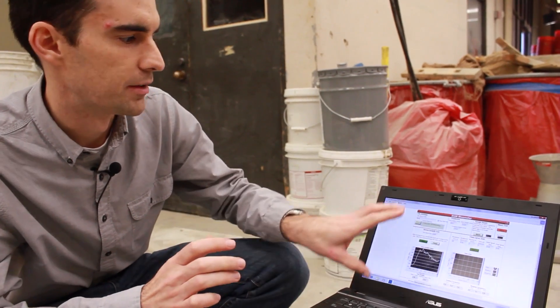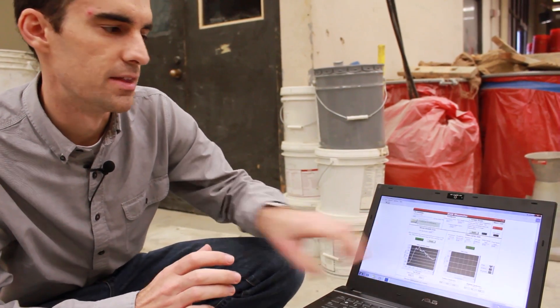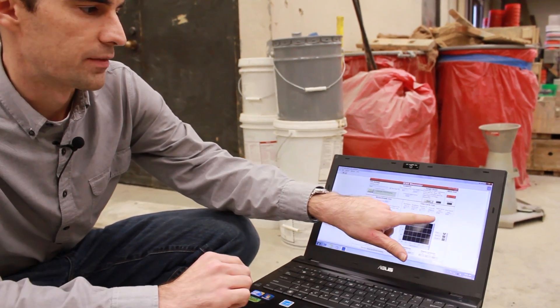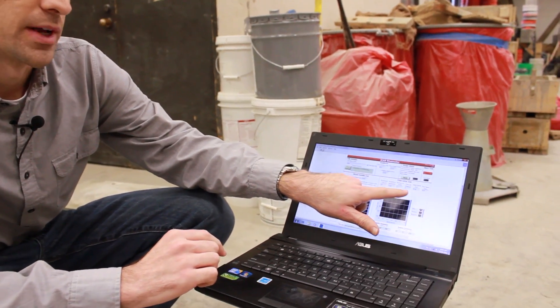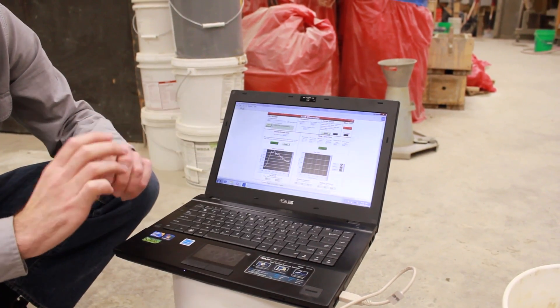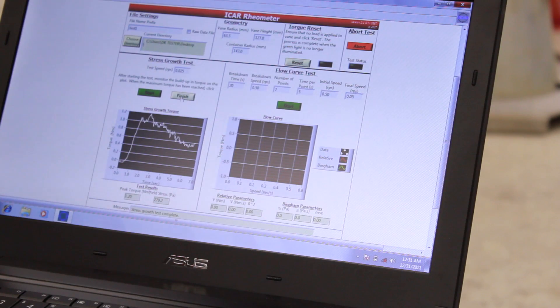So with the stress growth test complete, we'll now run a flow curve test on the same sample. And it's okay to do that, to run the stress growth test first and then the flow curve test. With the flow curve test, we can put in our different parameters for how the test operates. The rheometer is pre-populated with parameters that we found work well for most concretes. Of course you can customize as needed.